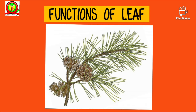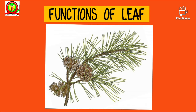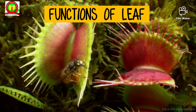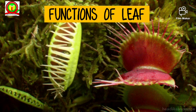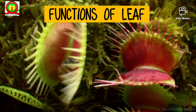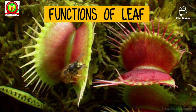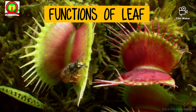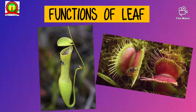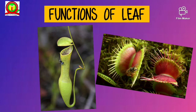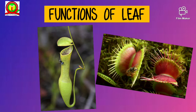There are certain plants that eat insects. They are called insectivorous plants. For example, Venus fly trap, pitcher plant, etc. In these plants, leaves are modified to set a trap for insects.